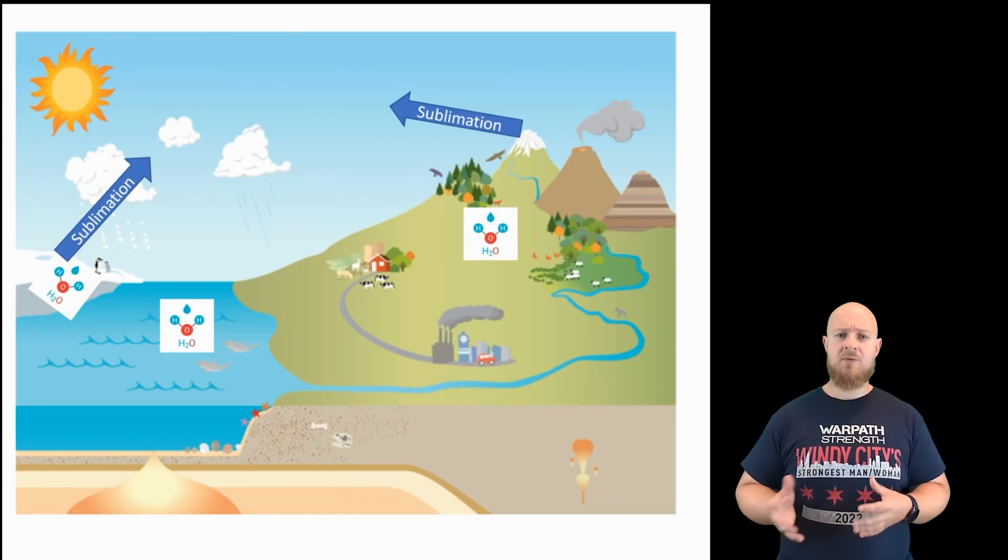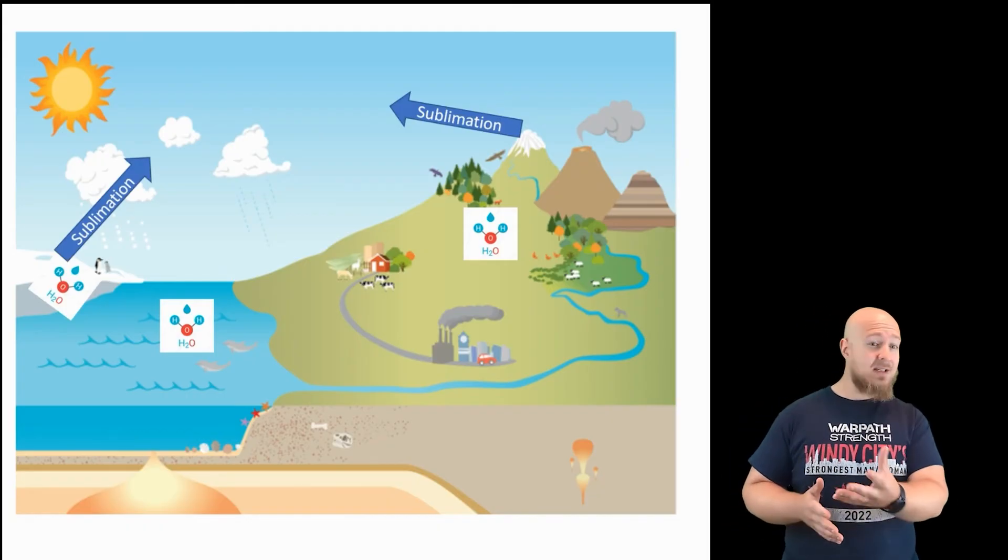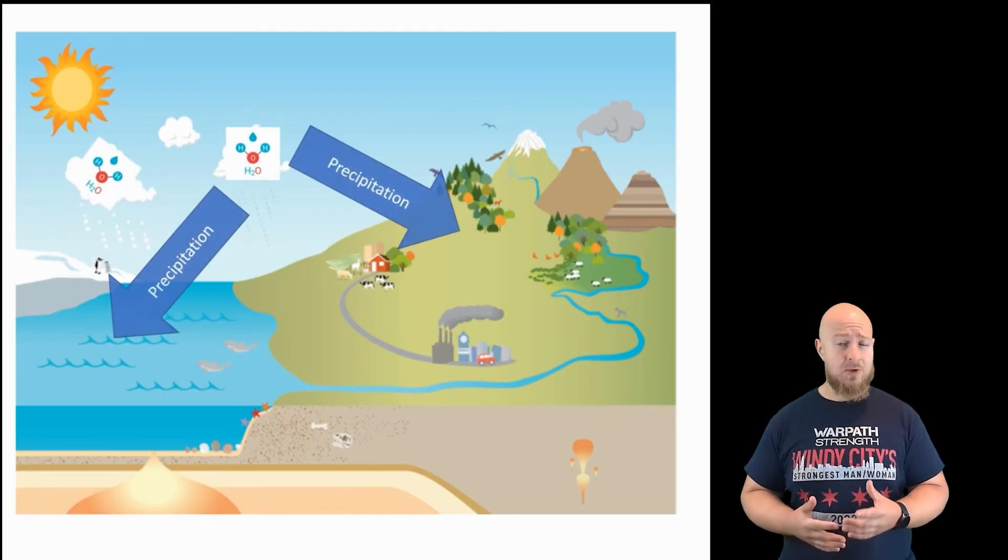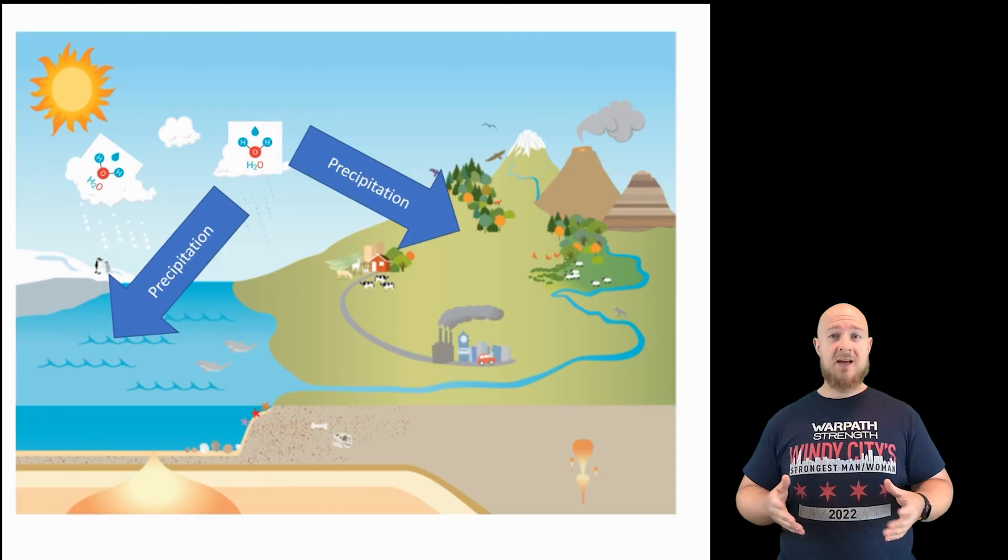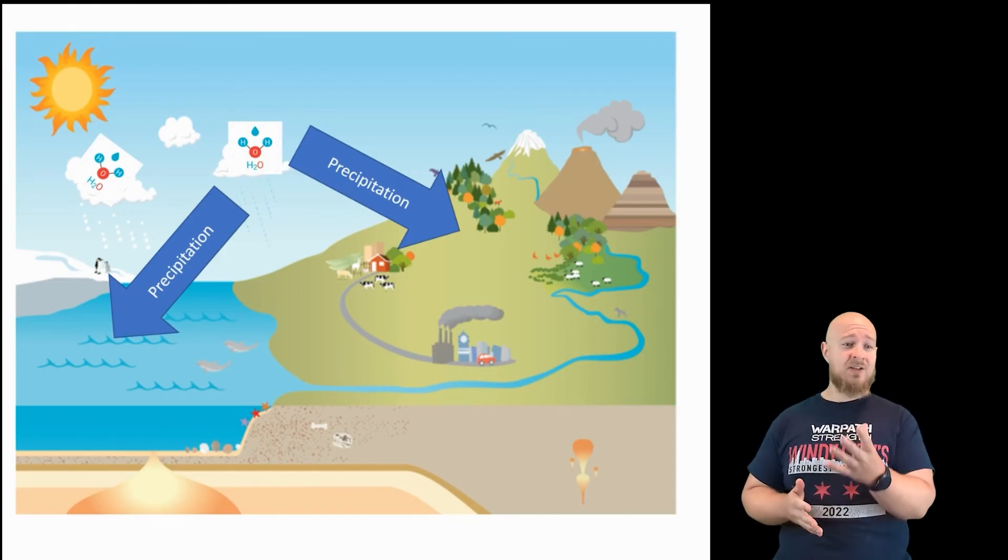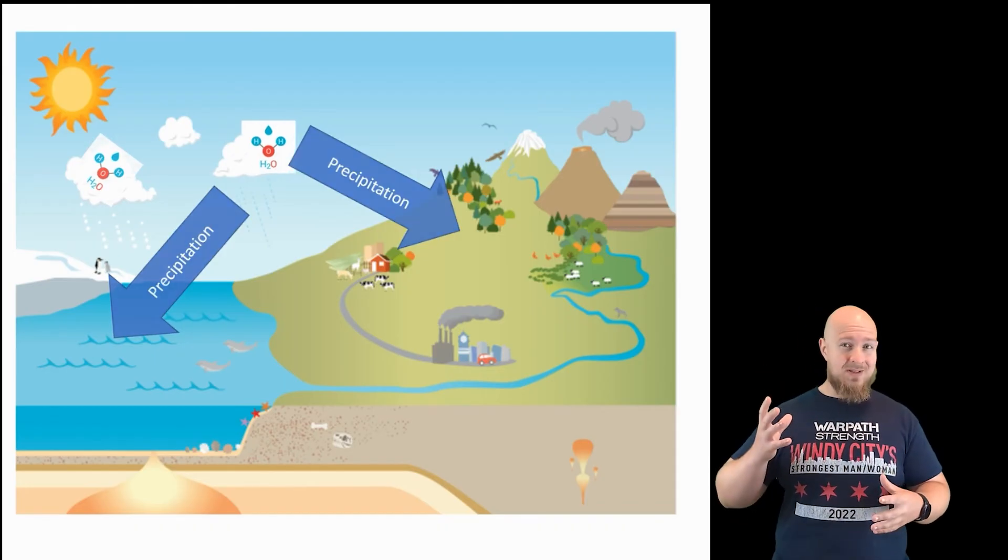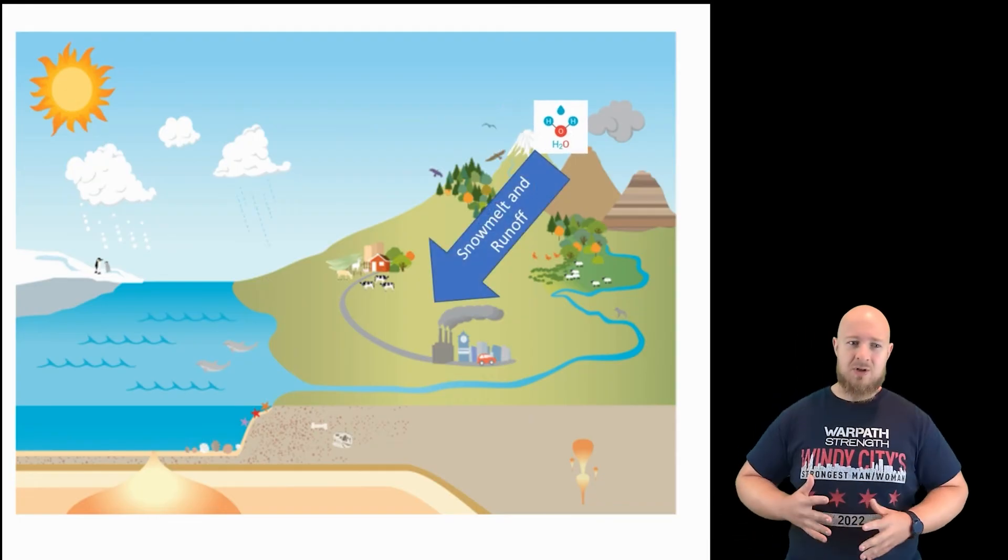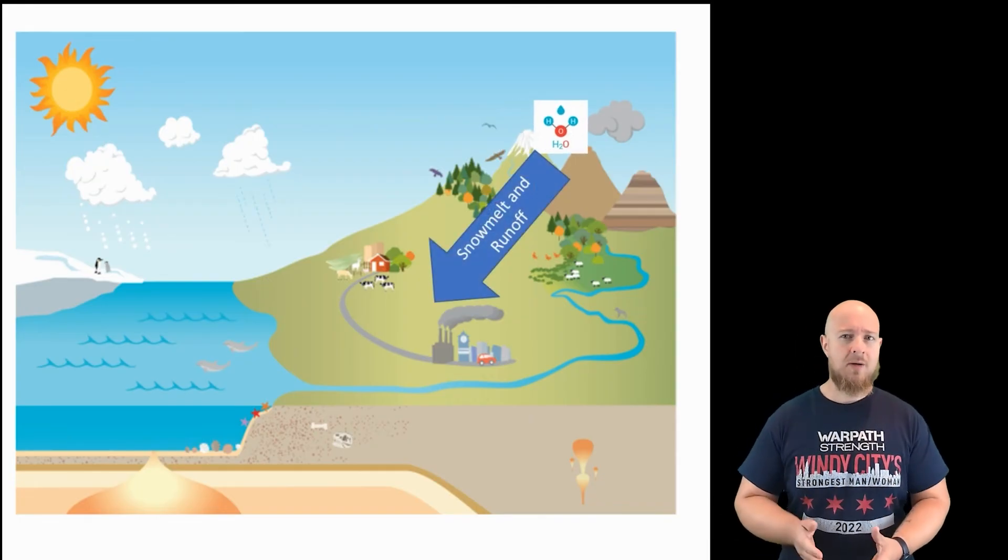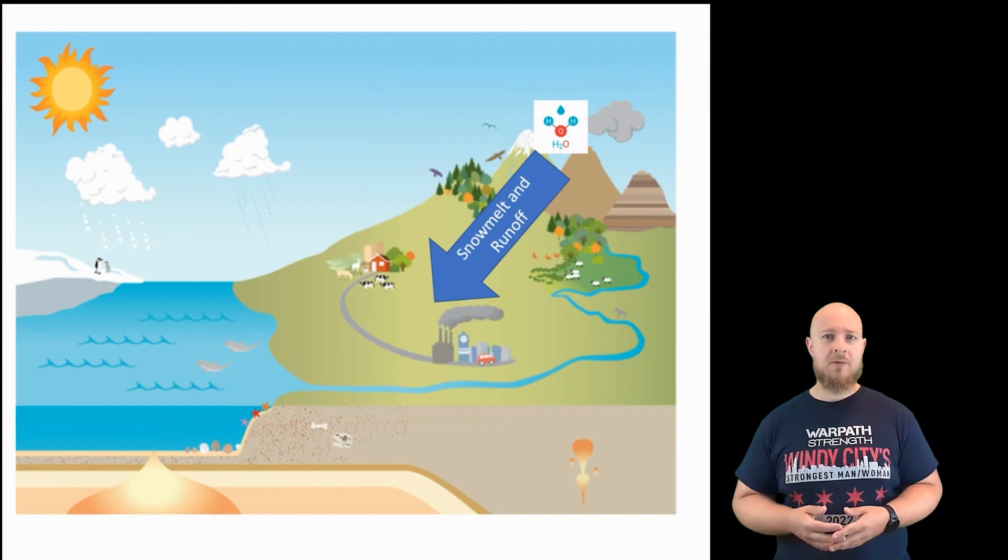Of course, now that we have water in the atmosphere, it can condense into clouds and then fall as rain, which we call precipitation. Sometimes, instead of rain, the water falls as snow on top of mountains, and then spring comes and all that snow starts to melt and that water runs off. Oh, that's another process. There is water runoff.